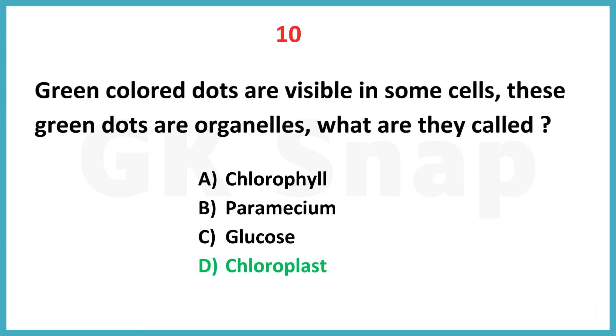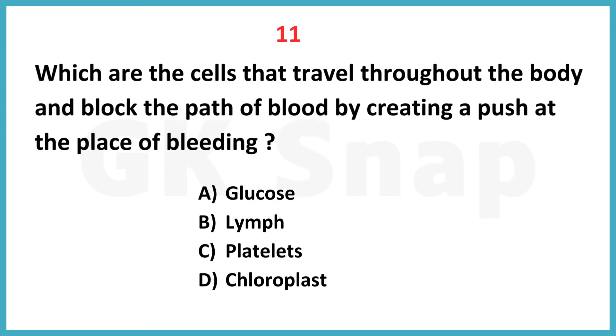Correct answer is option D: Chloroplast. Which are the cells that travel throughout the body and block the path of blood by creating a push at the place of bleeding?